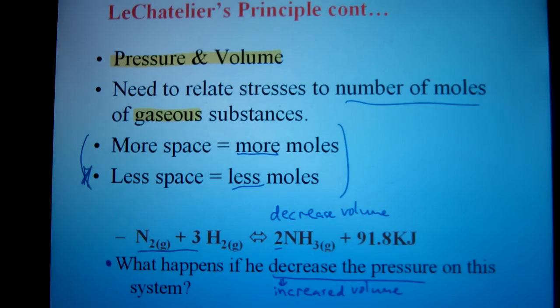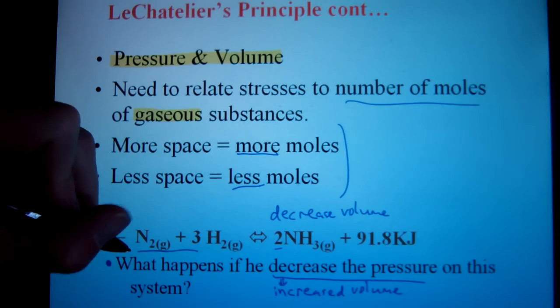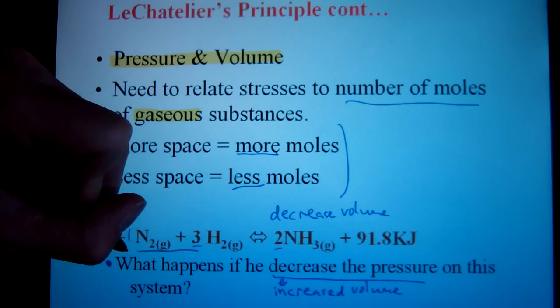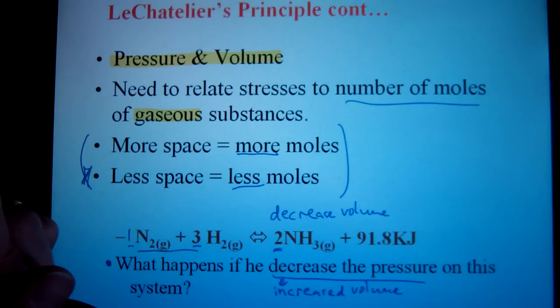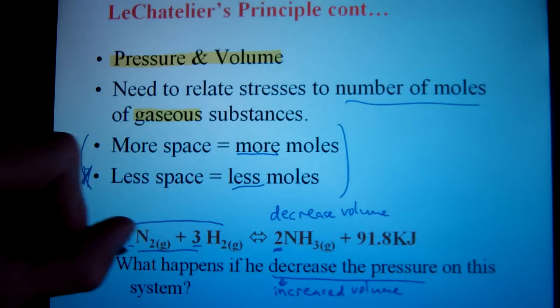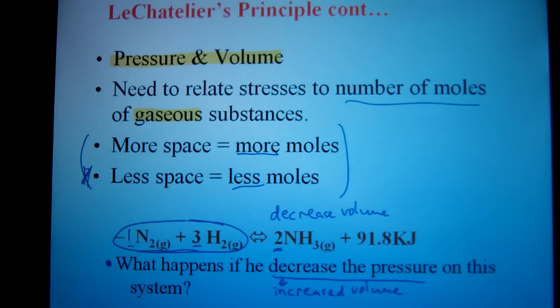If I increase the volume, that means I have more space to move around. If I have more space to move around, then I'm going to have fewer collisions. So more space would mean fewer collisions. That's going to change the equilibrium. So if I want to retain my equilibrium and get it back, then I'm going to have to shift to the side that's going to increase my collisions. So which side would increase the collisions here? The side with more moles. I have one mole of nitrogen on this side. I have three moles of hydrogen. So I have four moles on that side versus two moles on the product side. So if I was to increase the volume, that means I would actually shift to the reactant side.